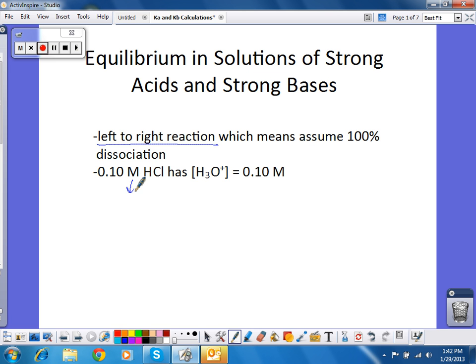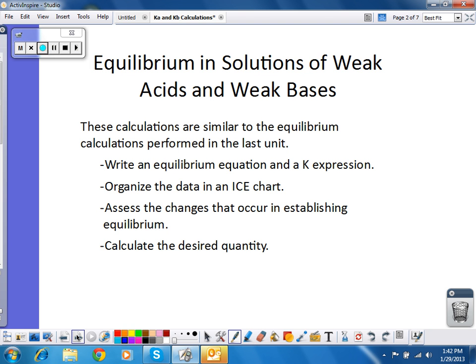So, what this means is that if I take HCl and put it in water to get hydronium and Cl-, that really what's happening is not that, but that, with very little going back the other way. I can assume that this goes 100% left-to-right, so 0.1 molar HCl, 0.1 molar hydronium. So really, when we're looking at equilibrium calculations with acids and bases, we're looking at weak acids and weak bases.